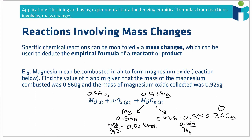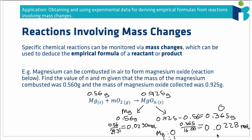For oxygen: 0.365 ÷ 16.00 = 0.0228 mol. We now have the number of moles of magnesium and of oxygen in the compound. Comparing them — 0.0230 vs 0.0228 — these are effectively the same, differing by less than 1%, which we can attribute to experimental error. This means we have a 1:1 ratio of magnesium to oxygen in our magnesium oxide.